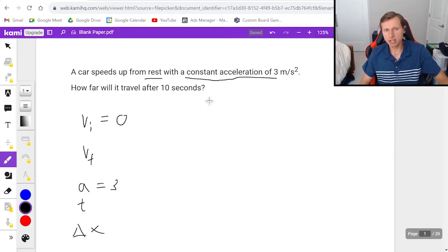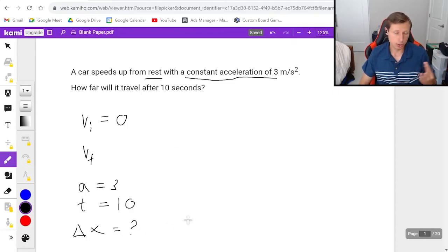Acceleration, we know is 3 because it says it in the problem. The time is 10 seconds. Again, it's in the problem. And then delta x, the distance or displacement, is what we're solving for. And we know that because it asks how far will it travel.